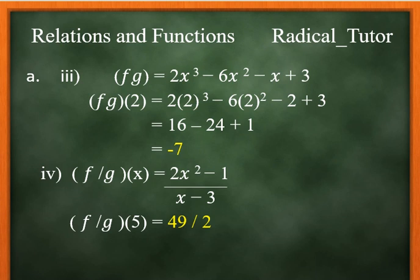For f times g at 2, substitute x equals 2 into 2x cubed minus 6x squared minus x plus 3. That's 2 times 8 minus 6 times 4 minus 2 plus 3, which equals negative 7.